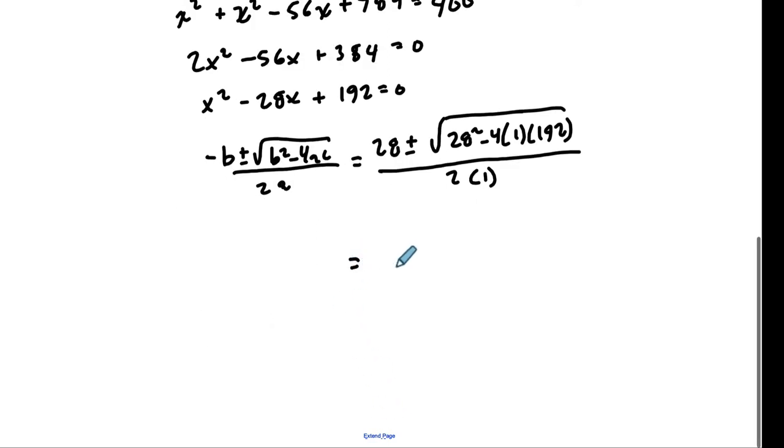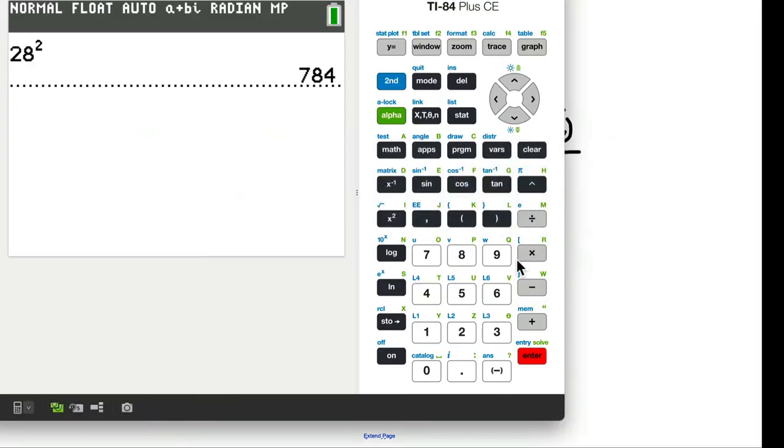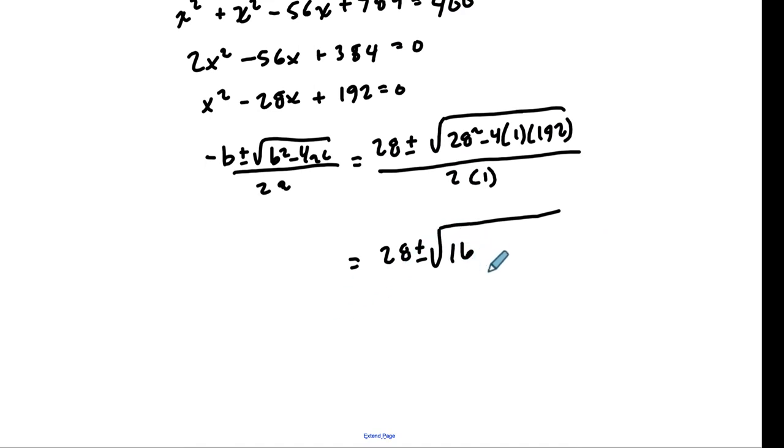All right. Then we're just solving that. 28 plus or minus. Again we have 28 squared, we get 784. Let me just plug that in. So 784 minus 4 times 1 times 192. Okay. That's 16. That works out nicely. Plus or minus 16 over 2. So that's just 28 plus or minus 4 over 2. So 28 plus 4 is 32 over 2 which is 16. And then 28 minus 4 is 24 divided by 2 is 12.